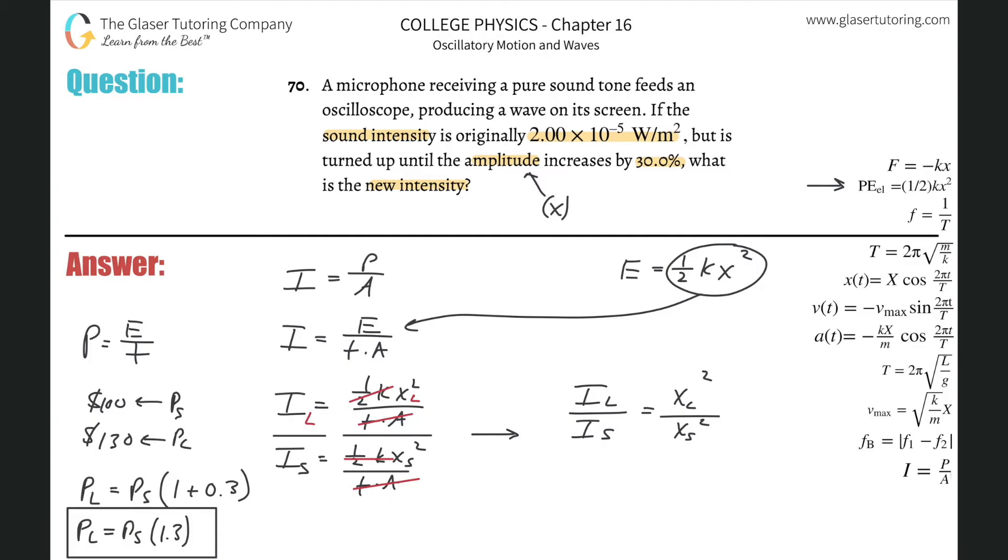In this problem it's the same thing. Instead of price though, it's just amplitude. So we can say that the larger amplitude will equal the smaller amplitude multiplied by 1.3. Now this is helpful because now we can begin to substitute some stuff into the equation. So now I have my larger intensity divided by my smaller intensity will be equal to... I have this equation solved for x sub l already, so why don't we plug in x sub s times 1.3 in for x sub l.